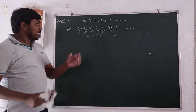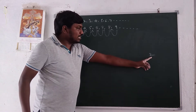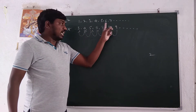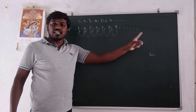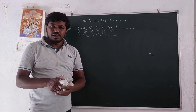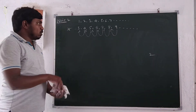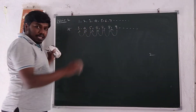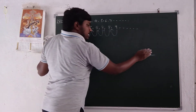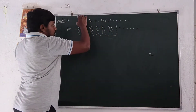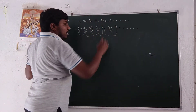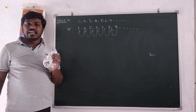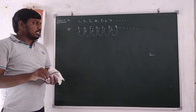The resulting sequence is also in AP. So the first property: if a constant is added to each term of an AP, then the resulting sequence is also in AP. Similarly, if a constant is subtracted from each term of an AP, then the resulting sequence is also in AP.